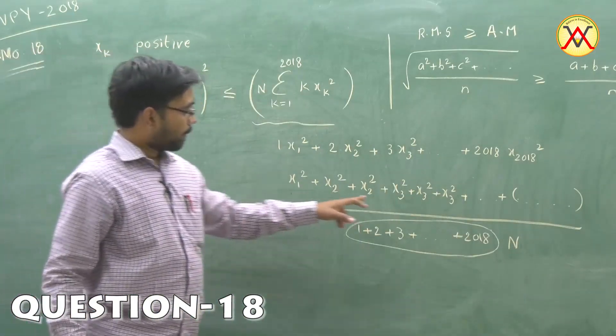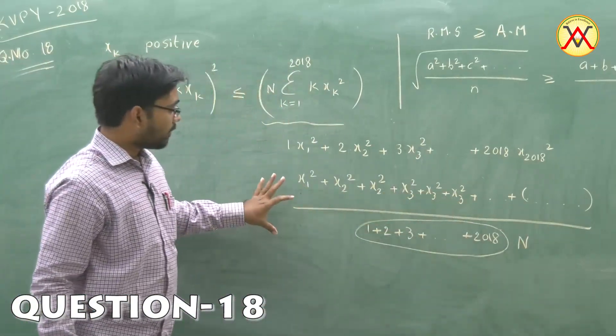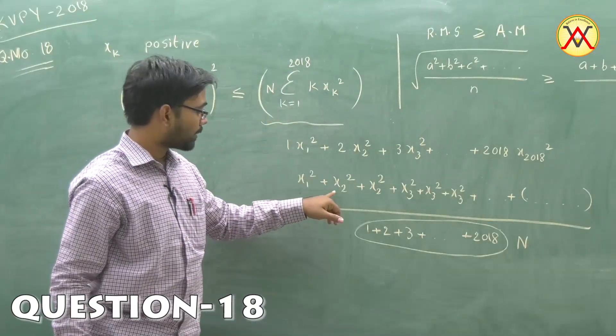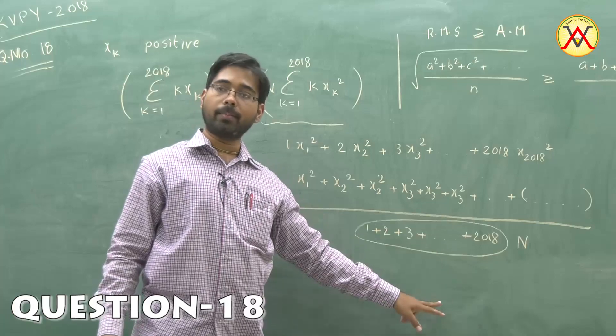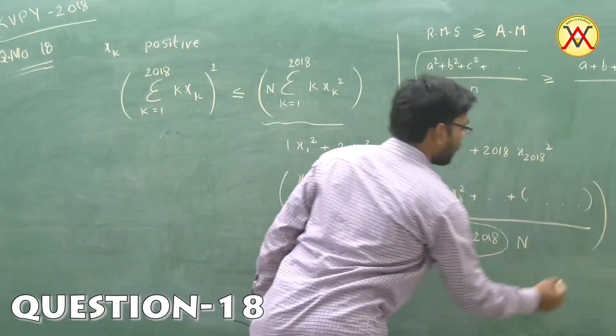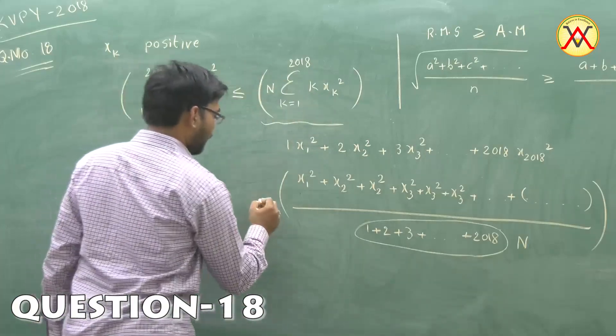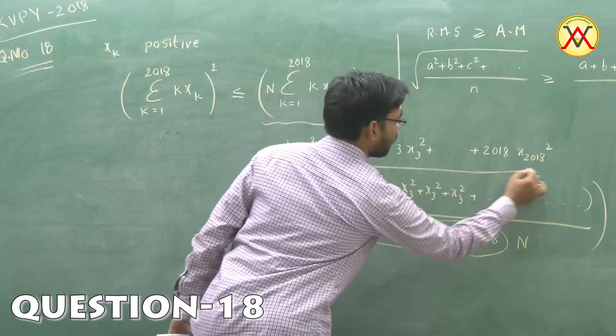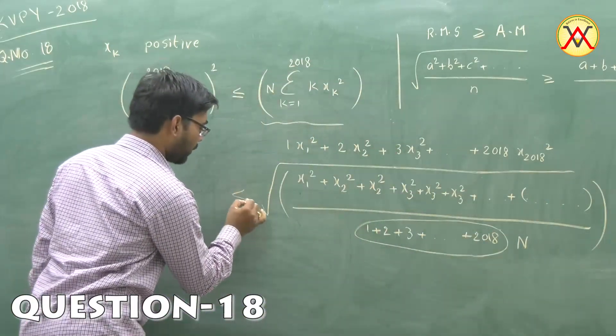These terms are very similar to RMS. You have (a² + b² + c² + ...)/n. This quantity under root is surely going to be greater than the AM of all these.